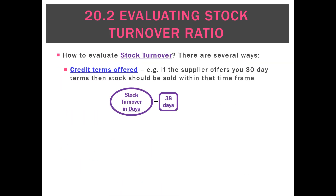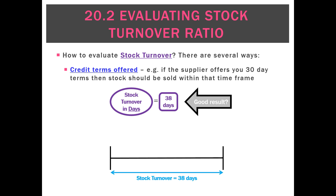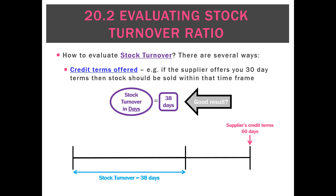What about the credit terms that we get offered? If our suppliers sell to us on 30-day terms and our stock turnover ratio is 38 days, is that a good result or a bad result? We're going to say that's a bad result — suppliers want their money back within 30 days but on average we're not selling the stock for 38 days. There's a lag of eight days where we don't have the money. What about if our creditors offer us terms of 60 days? Well, all of a sudden that 38 days is a very good result — we're selling our stock well before the supplier actually wants their money back.